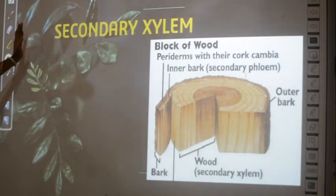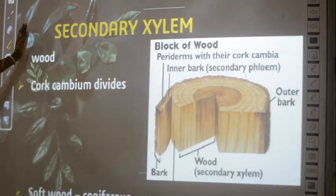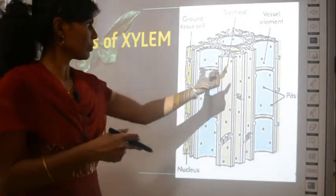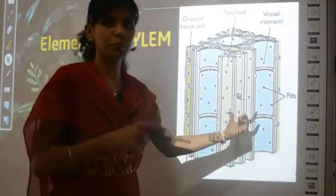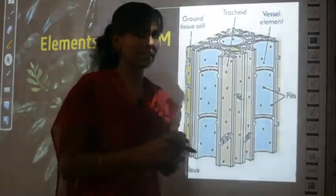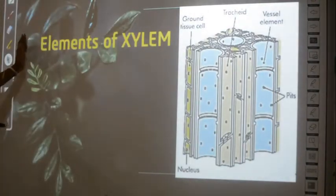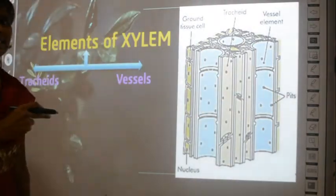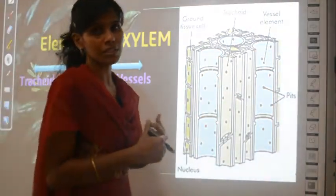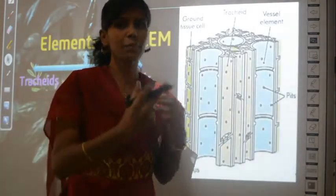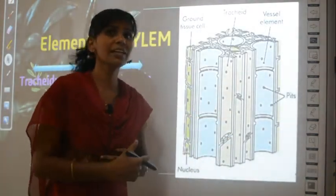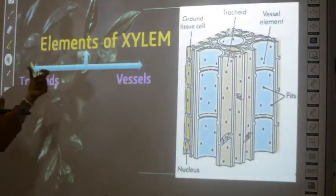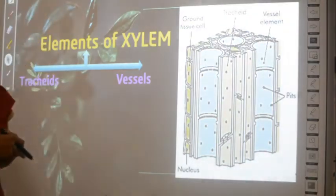The elements of xylem — the yellow color portion is one element and the blue color portion is another element. The yellow color portion is called tracheids and the blue color region is called vessels. Elements means what xylem is made up of — xylem is made up of two structures called tracheids and vessels.